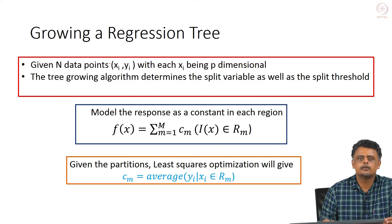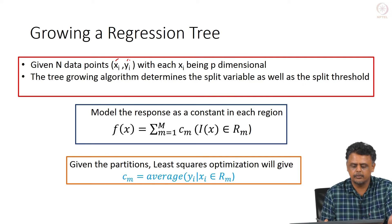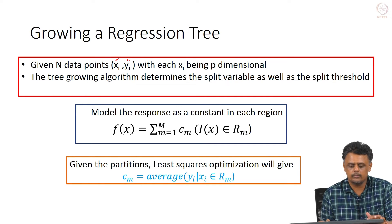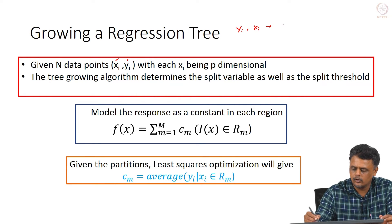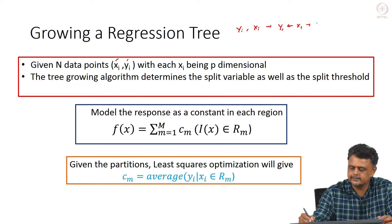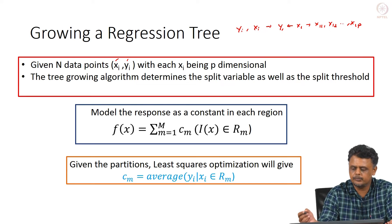To grow a regression tree, we consider N data points (X_i, Y_i), where each X_i is P-dimensional. Y_i is the output corresponding to input X_i, and each X_i has components X_{i1}, X_{i2}, up to X_{iP}. The tree growing algorithm determines the split variable — which of the P features to split on — and also the split point, i.e., the threshold value within that feature.